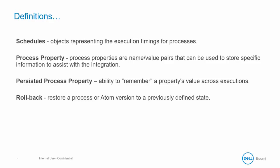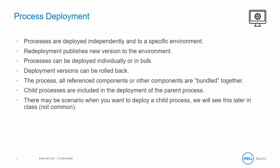A persisted process property is the ability to persist or remember a property value across subsequent executions. A rollback means essentially restoring a process or Atom version to a previously defined state. A deployed process acts as a snapshot of that process for source control and can be used to rollback. A process gets deployed to an environment and not an Atom or runtime. It can be redeployed to the same environment whenever you have a new version, individually or in bulk. Once deployed, it has a deployment history allowing rollback to a previous version. The process and all referenced components — including child processes — get bundled together during deployment.